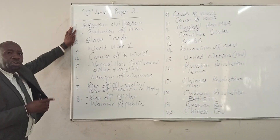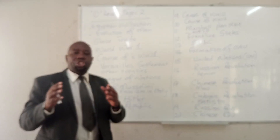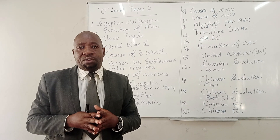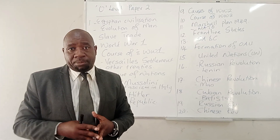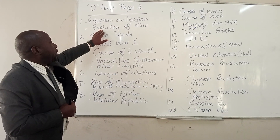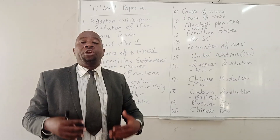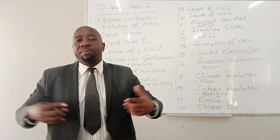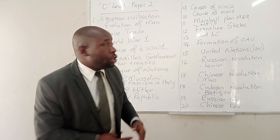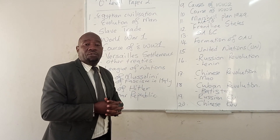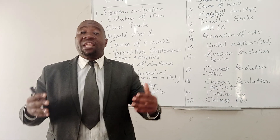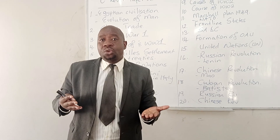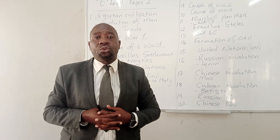On question number one, there is usually a question talking about the Egyptian civilization — what took place in Egypt during that particular period of time. A question might also come on the evolution of man. Remember, the first man was a complete — he developed and eventually became a homo sapiens sapiens. The syllabus that is now done starts from form one, so a question might examine you on the stuff you covered in form one.